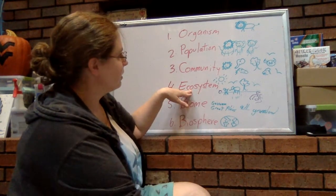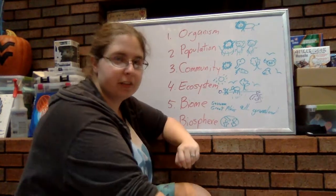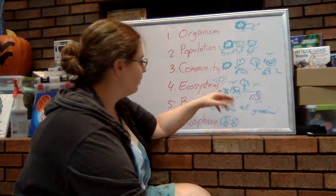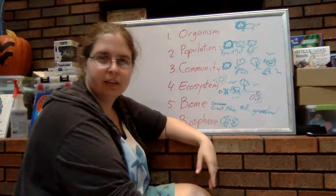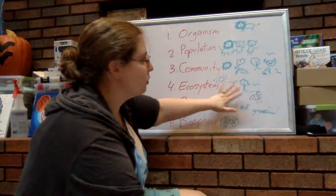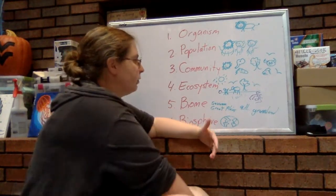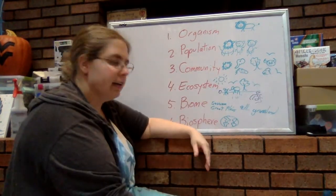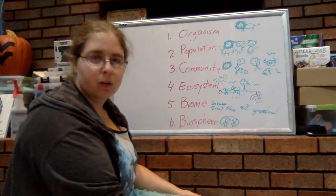The ecosystem would be the community plus the non-living factors, the abiotic factors, such as sunlight, the weather, the air, the water, the rock, the dirt. All of those make up the ecosystem. And in this case, that ecosystem would be the savanna. The savanna is an ecosystem that has this community living in it and has very particular non-living factors, like very specific weather patterns.